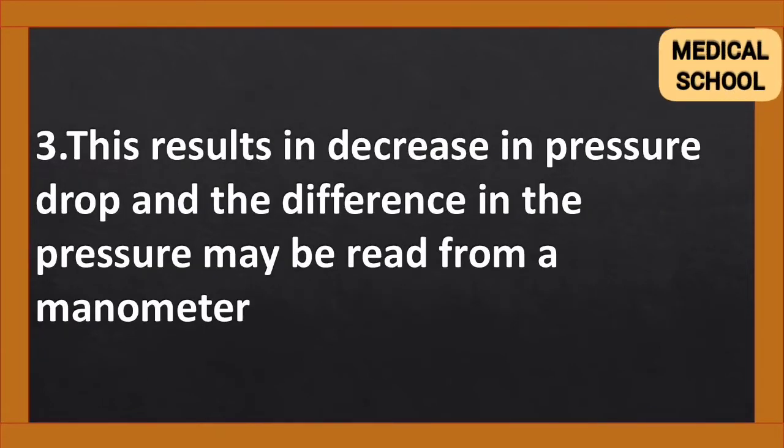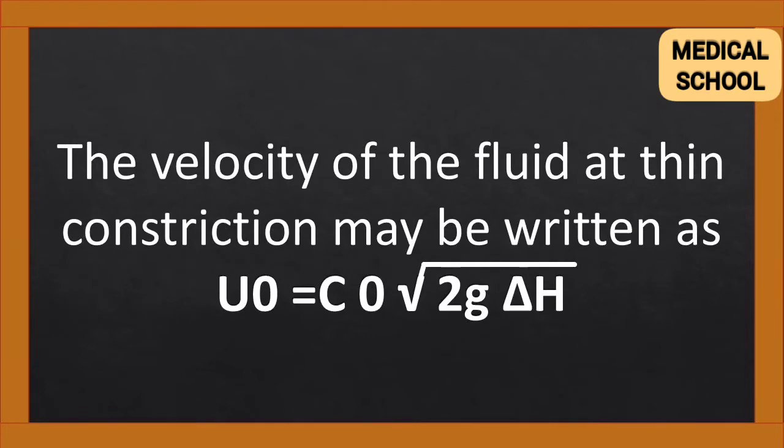This results in decrease in pressure drop, and the difference in the pressure may be read from a manometer. The velocity of the fluid at thin constriction may be written as U is equal to C root of 2G delta H.